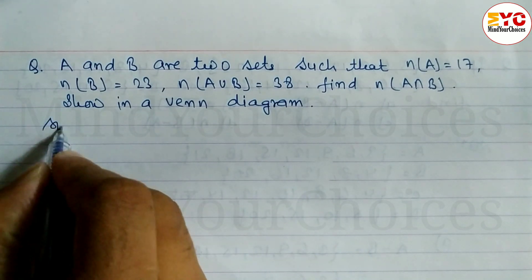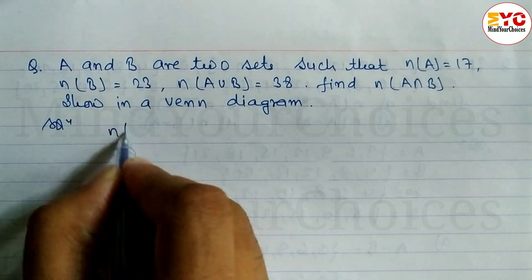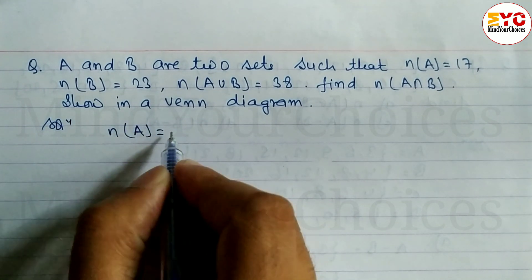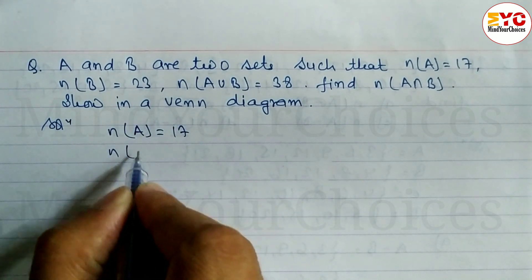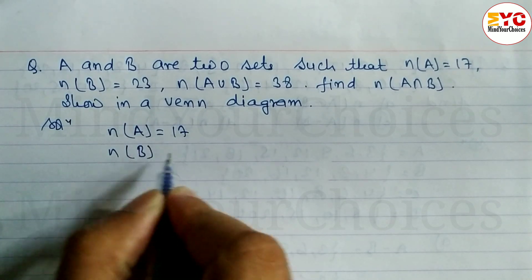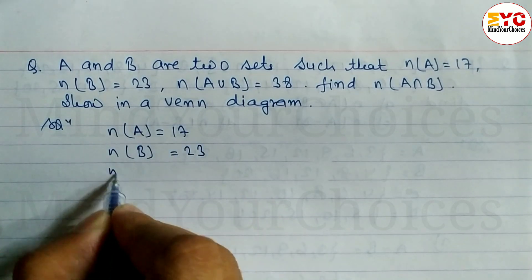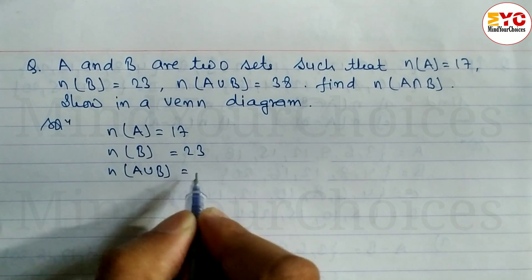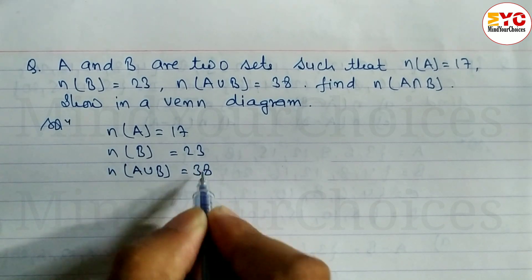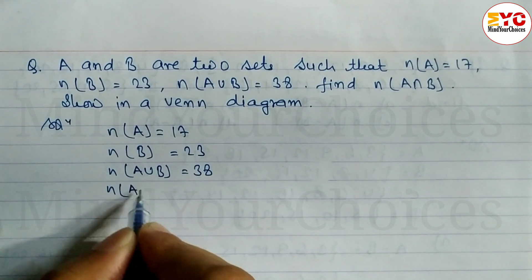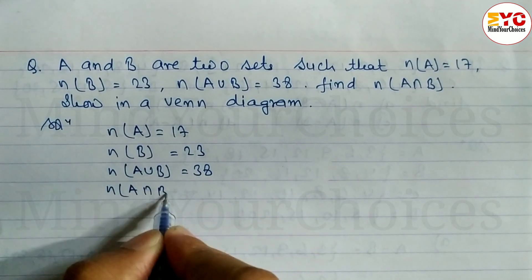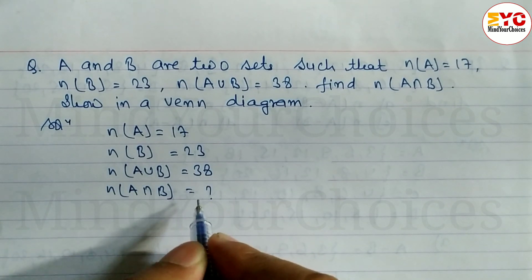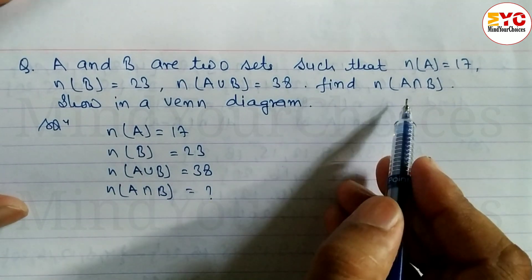Let's start the solution. Cardinal number of A is equal to 17, cardinal number of B is equal to 23, and cardinal number of A union B is 38. We have to find out the cardinal number of A intersection B. We just have to use the formula and then show it in a diagram.